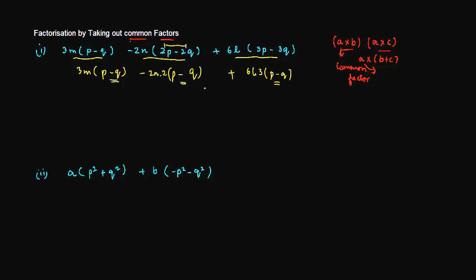Now if we take (p−q) as a common factor, what are we left with? If you divide by (p−q) you get 3m. In the second term, 2 into 2 gives 4, so we get −4n. In the third term we are left with 6l, but 3 multiplied by 6l gives 18l. So we have factorized this expression as (p−q)·(3m − 4n + 18l).